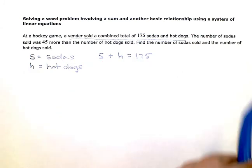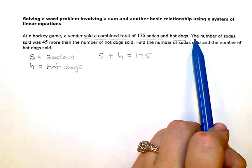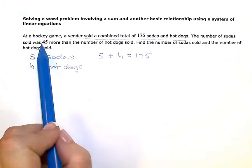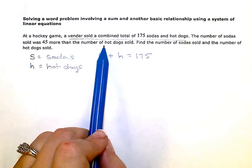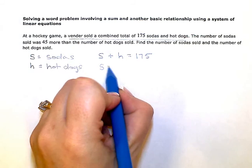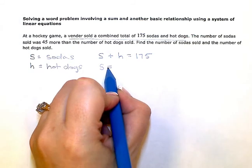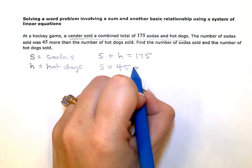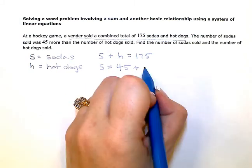My second equation is going to come from this next sentence. The number of sodas sold was 45 more than the number of hot dogs sold. So if I translate that to an equation, the number of sodas sold was equal to 45 more than or added to the number of hot dogs sold.